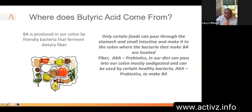Butyric acid is produced in our colon by friendly bacteria that ferment dietary fiber. Only certain foods can pass through the stomach and small intestine and make it to the colon where the bacteria that make butyric acid is located. Fiber, also known as prebiotics in our diet, can pass into our colon mostly undigested and can be used by certain healthy bacteria — the probiotics that create and make butyric acid.